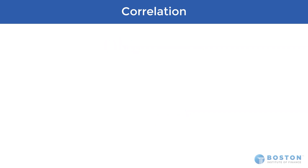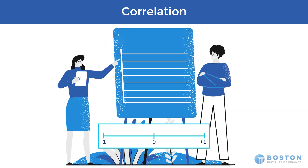Correlation is important because it is the more detailed version of covariance. Not only will it tell us if two securities move in the same direction as each other, it will also tell us how closely those securities will move in relation to one another.